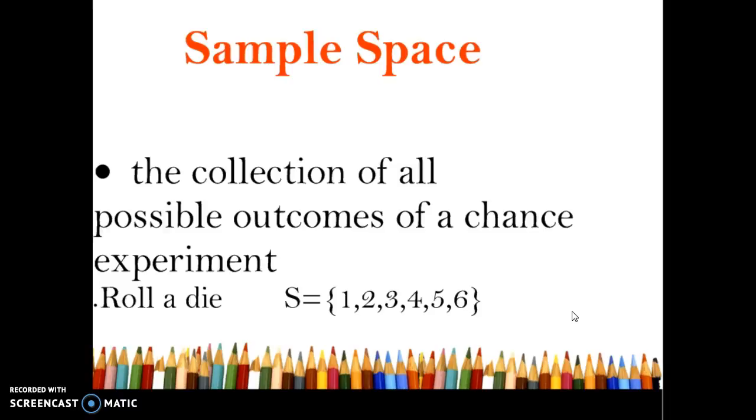Sample space is a collection of all possible outcomes of a chance experiment. For example, rolling a die. If we roll a six-sided die we have the options 1, 2, 3, 4, 5, and 6. So our total sample space is all six of those options and we'll write it in these little curly brackets just noting our sample space.